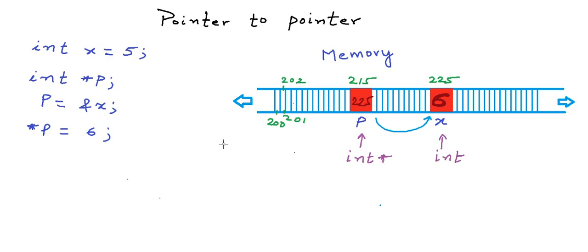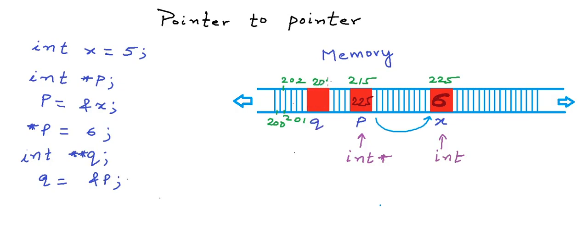Now, can I create a pointer to this variable p, which itself is a pointer to integer? Yes, we actually can. So let's say we want to create a variable named q that will store the address of p. We need a pointer of a particular type to store the address of a particular type of variable. To store the address of a pointer to integer, we will need a pointer to pointer — so we put two asterisk signs in front of the variable name: int** q. This variable q can store the address of p. Let's say q is created at address 205, and now q stores the address of p, so q points to p. The type of q is int** (int asterisk asterisk).